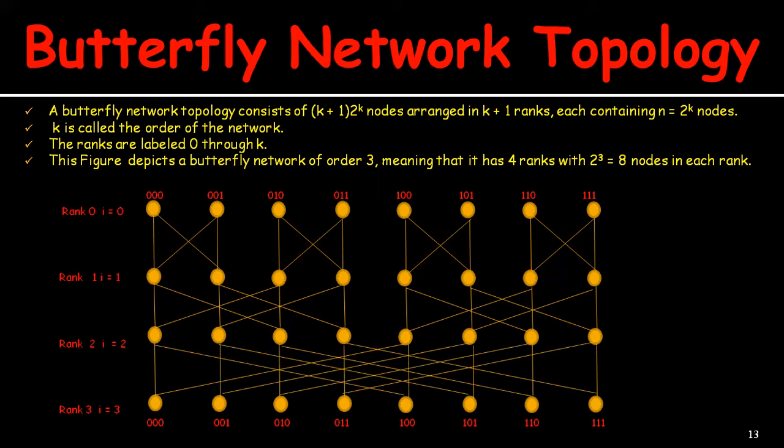This is what we call a butterfly network topology. The algorithm works for every node p_(i,j) on the j-th node on the i-th rank, for i between 1 to k and j between 0 to n, constructing two nodes p_(i−1, j) and p_(i−1, m) by inverting the i-th bit of j in binary. I hope you understood this butterfly network. If you like this video, please subscribe to my channel and press the bell icon for the latest notifications. Thank you.